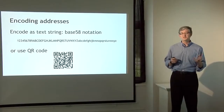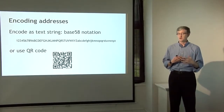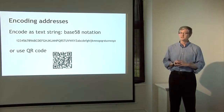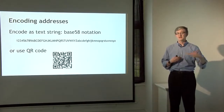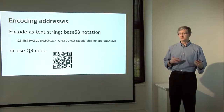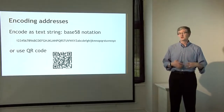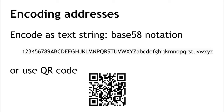One thing you need to do if you're going to receive Bitcoins into your wallet or spend them to somebody else is have a way of exchanging an address. There are two main ways that addresses are encoded or conveyed: the first is as a text string, and the second is as a QR code. As a text string, we take the bits of the key and encode it as a number in base 58 notation.